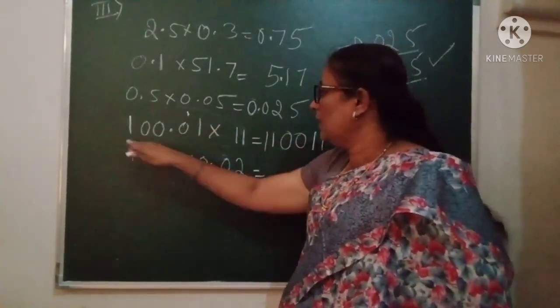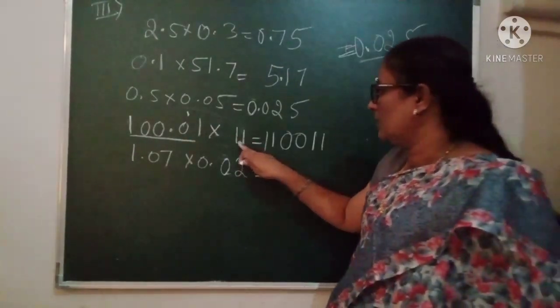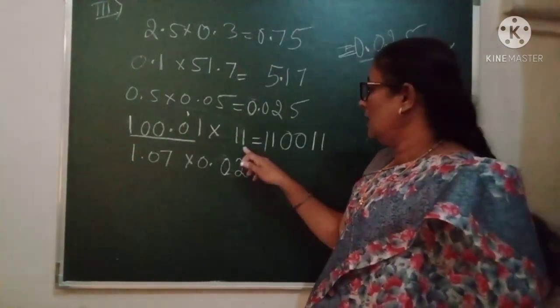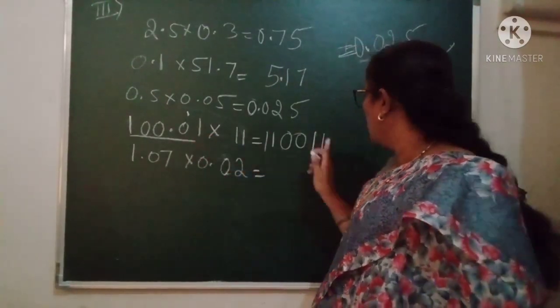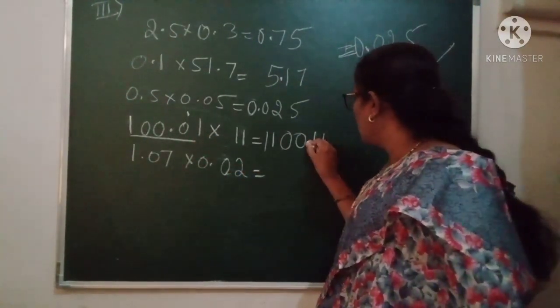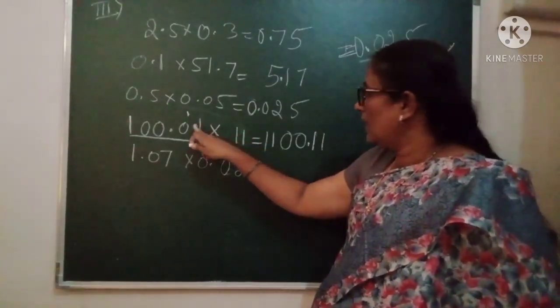Now we have decimal point only on this one number. We don't have any decimal point on 11. So now count the digits: 1, 2. Go from this side: 1, 2. So after 2 digits, we place the decimal point this way.